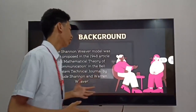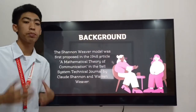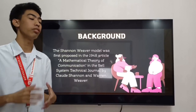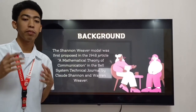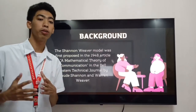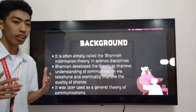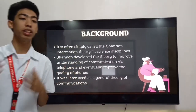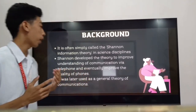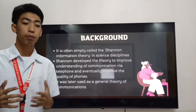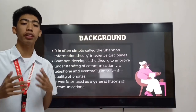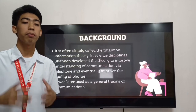Now let's proceed to the background of this theory. The Shannon Weaver Model was first proposed in a 1948 article in the Bell System Technical Journal by Claude Shannon and Warren Weaver. The article was named 'A Mathematical Theory of Communication.' Shannon and Weaver were both from the United States — Claude Shannon was a mathematician, while Warren Weaver was an electrical engineer. This theory is often simply called the Shannon Information Theory in scientific disciplines because many believe this mathematical theory of communication was mainly developed by Claude Shannon alone.